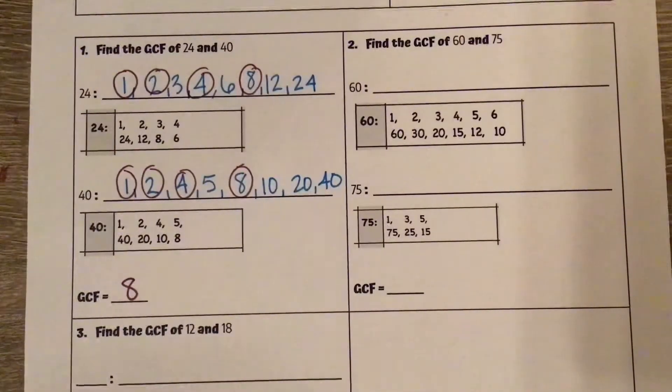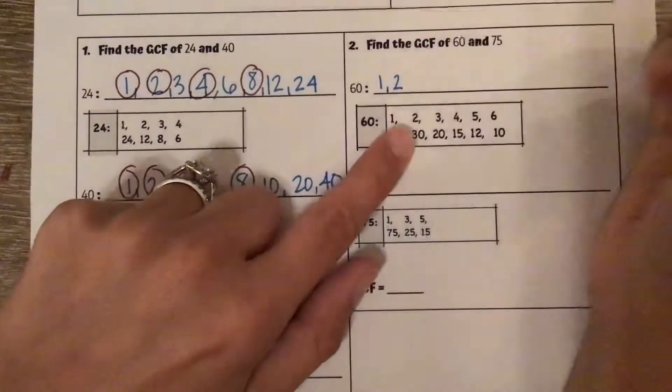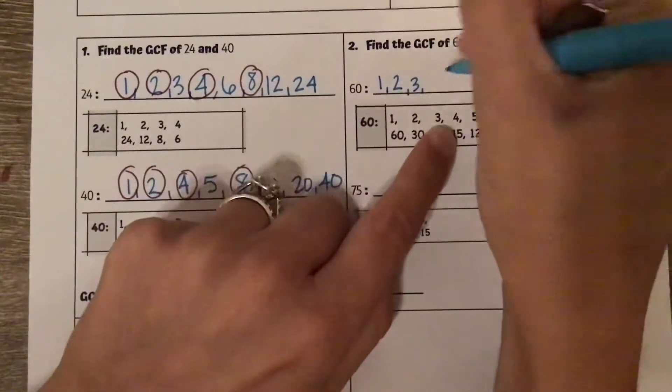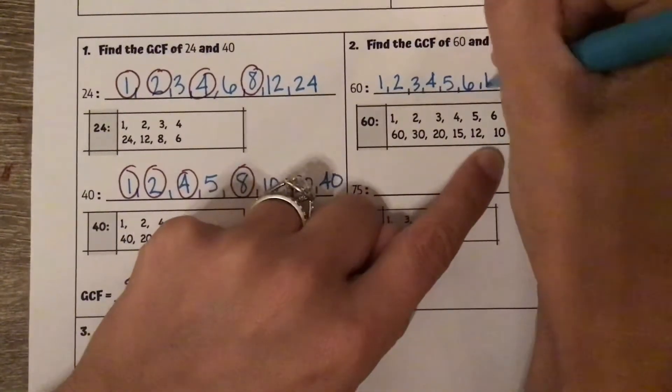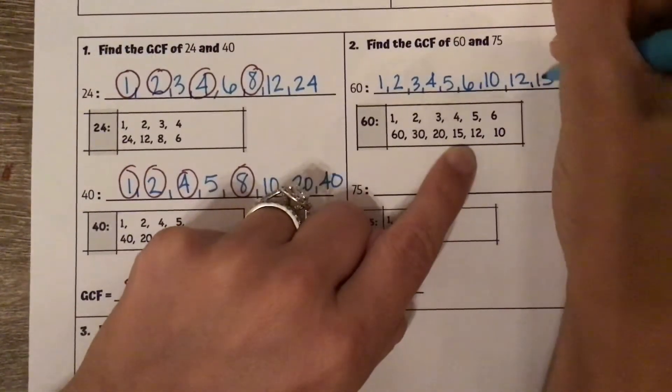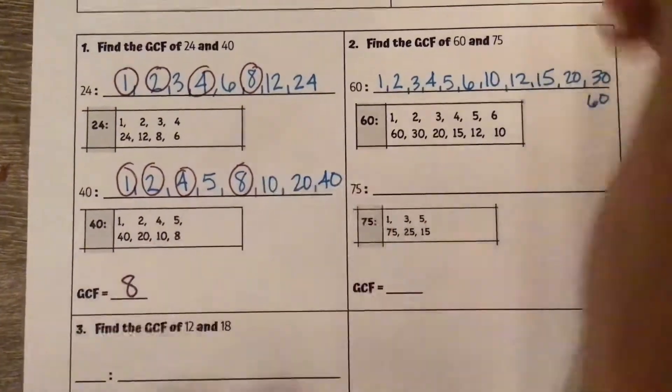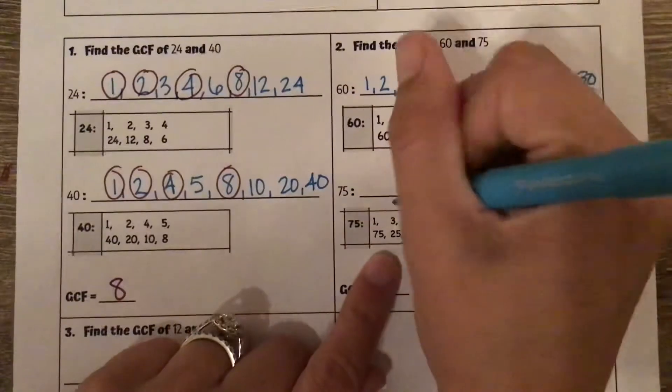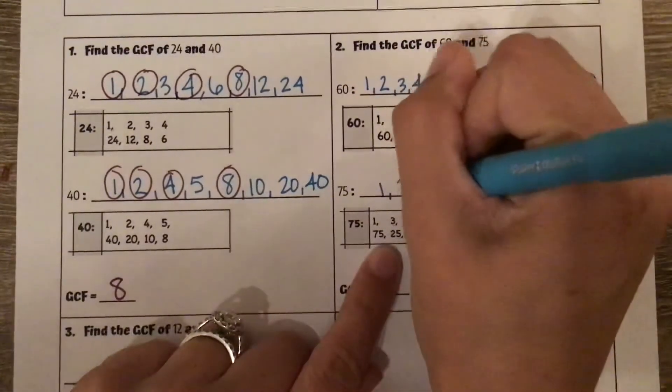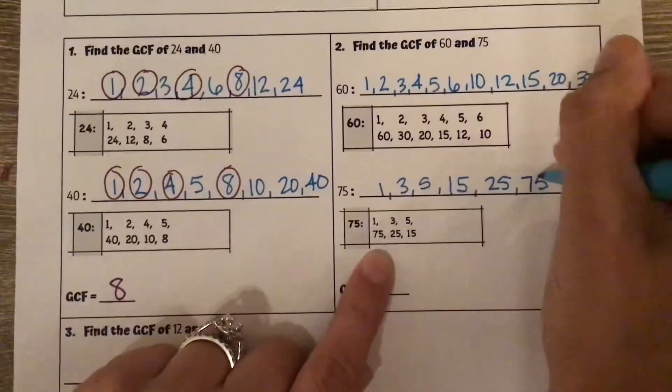Let's look at number 2. Again, screenshotted the factors of 60 for you. There's a lot, so I'm going to write small: 1, 2, 3, 4, 5, 6, 10, 12, 15, 20, 30, and 60. And then 75, got it down here: 1, 3, 5, 15, 25, and 75.